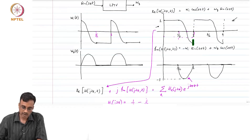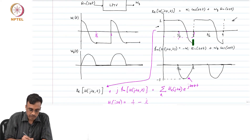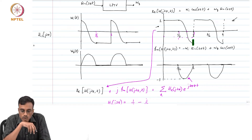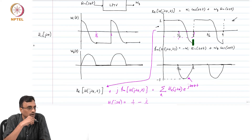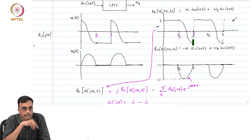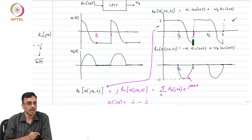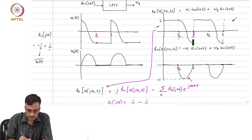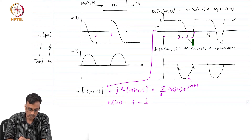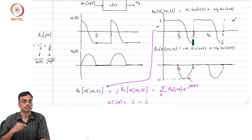Getting back to our system with W_i and W_q: what do we need to find H_{-1}(j2πf)? We need the average value of W_i(t), which is −1, and the average value of W_q(t), which is −1/2.